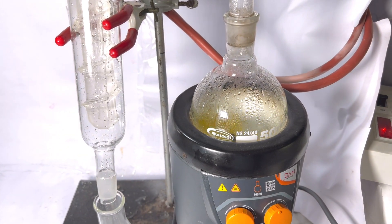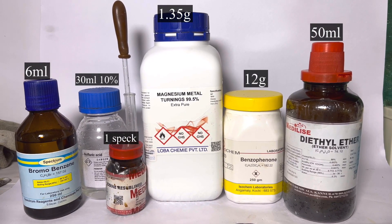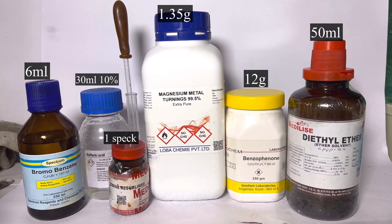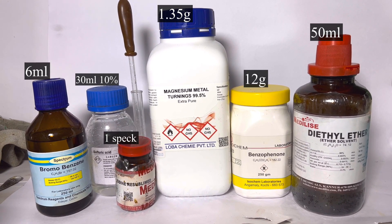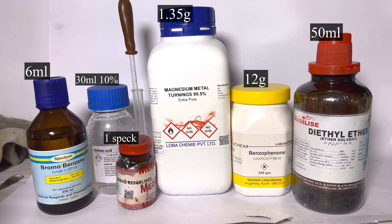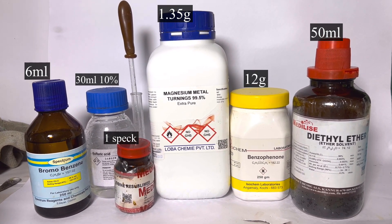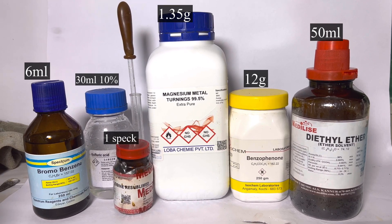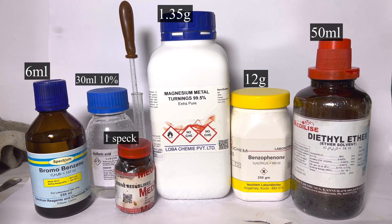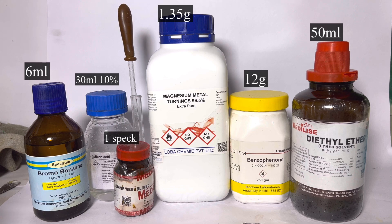For this experiment, we will need 1.35 grams of magnesium turnings, 1 speck of iodine crystal, 6 ml of dry bromobenzene, 12 grams of benzophenone, 30 ml of 10% sulfuric acid, 50 ml of sodium-dried anhydrous diethyl ether and ethanol for recrystallization.